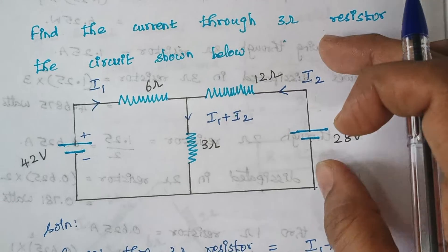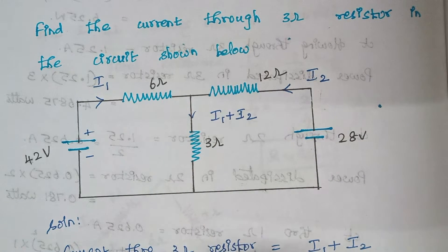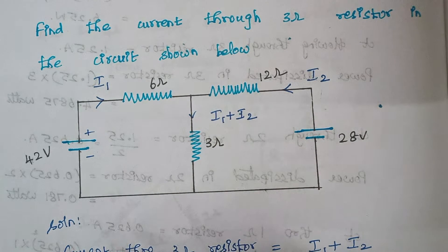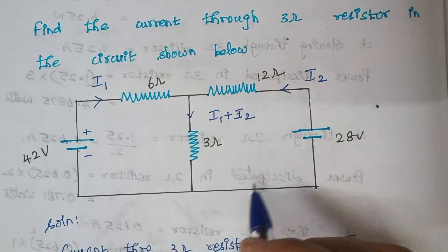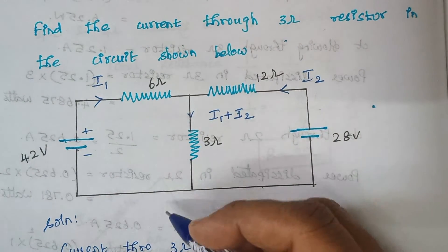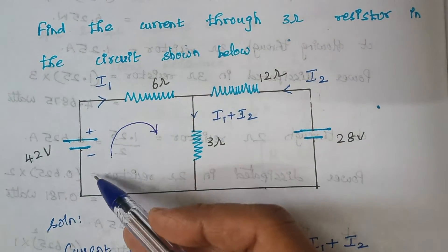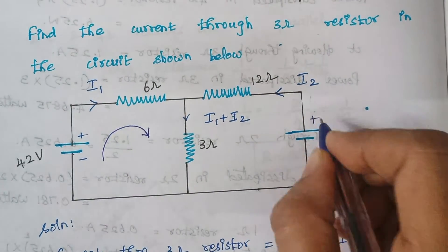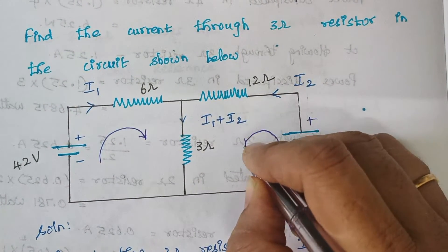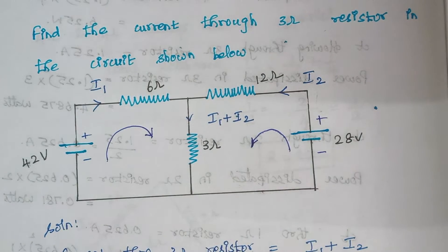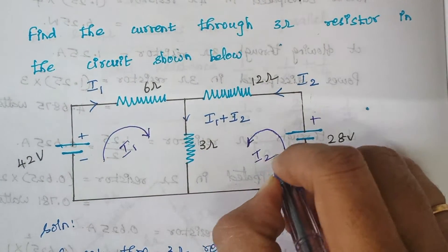Here is the given circuit diagram and we need to calculate the current that flows through this 3 ohm resistor. Before we proceed, we have to assume the direction of current that flows in these closed paths. Generally, we always assume that the current flows from lower potential to higher potential, starting from the source voltage. Similarly, the current in the second loop also flows from lower to higher potential. We are assuming the current flowing through the first loop is I1 and the second loop is I2.